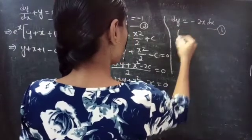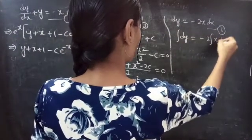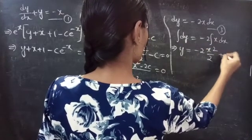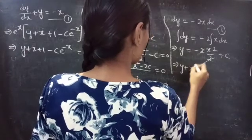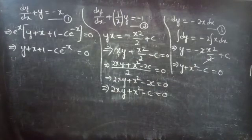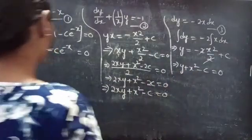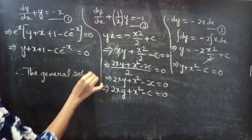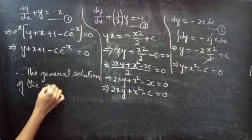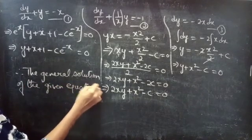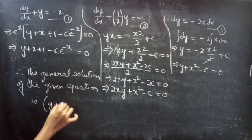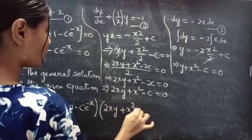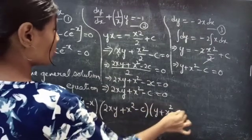For equation 3, the variables are separable. Integrating both sides: y = -2·∫x dx = -2·(x²/2) + C, giving y + x² - C = 0 as the solution to equation 3. The combined form of solutions 1, 2, and 3 is the required general solution: (y + x + 1 - C·e^(-x))(2xy + x² - C)(y + x² - C) = 0.